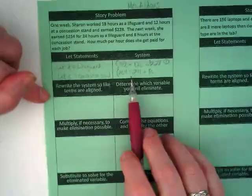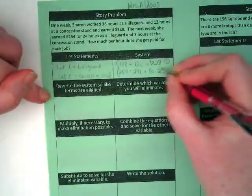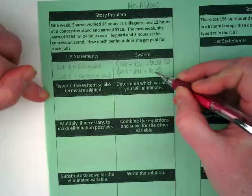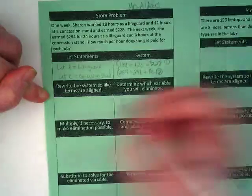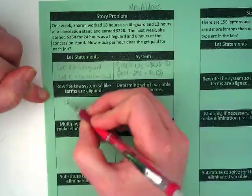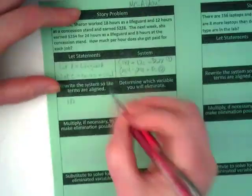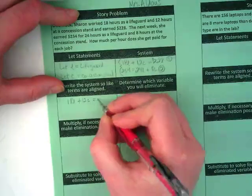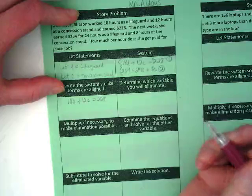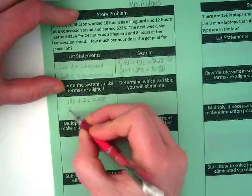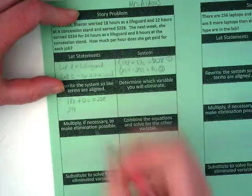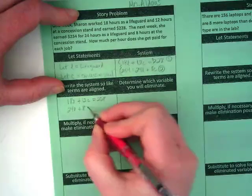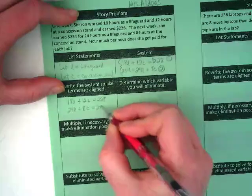Because if you remember with elimination, they are in standard form, and we're trying to cross out a term, right? So I'm going to rewrite this so that number 2 is written in standard form. Right now, it's in reverse standard form. So let's put the first one, 18L plus 12C equals 228. And then we're going to rewrite equation 2 as 24L plus 8C equals 254.